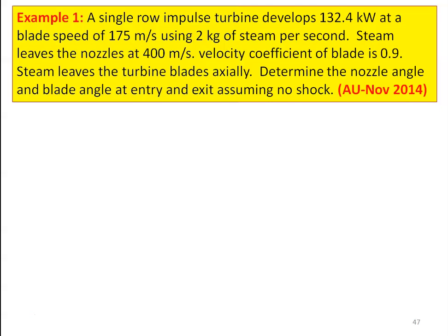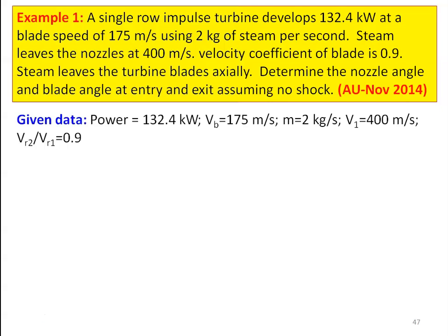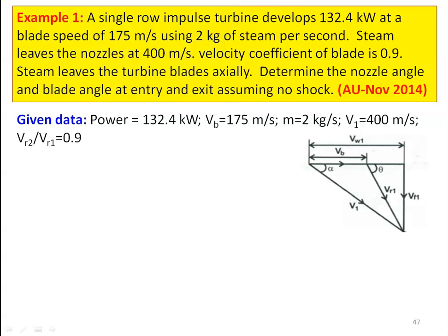A single row impulse turbine develops 132.4 kilowatts at a blade speed of 175 meters per second using 2 kg of steam per second. The steam leaves the nozzle at 400 meters per second. The velocity coefficient of the blade is 0.9. The steam leaves the turbine blade axially. Determine the nozzle angle, blade angle at the entry and the exit assuming there is no shock. The given data: power developed is 132.4 kilowatts, blade speed Vb = 175 m/s, mass flow rate = 2 kg/s, absolute velocity V1 = 400 m/s, blade coefficient Vr2/Vr1 = 0.9.